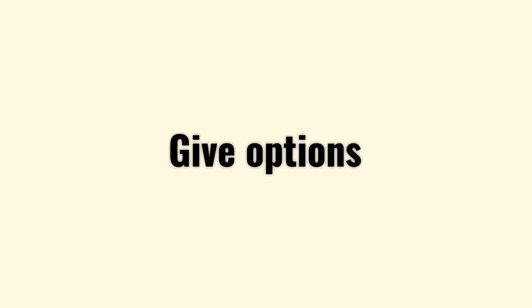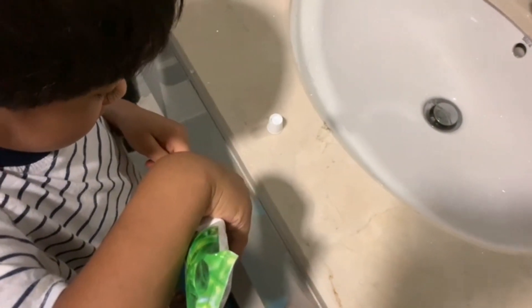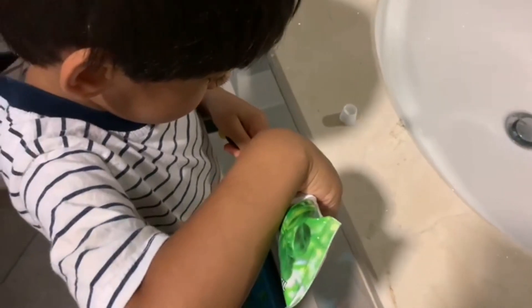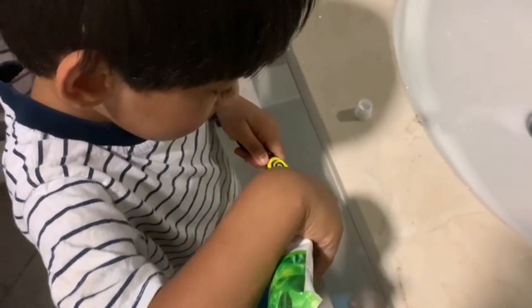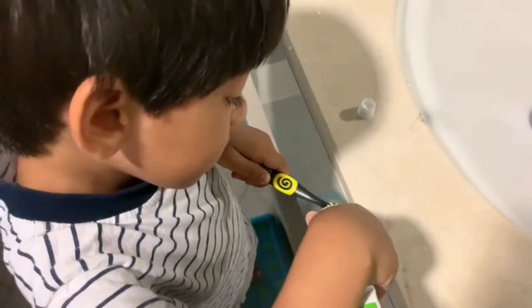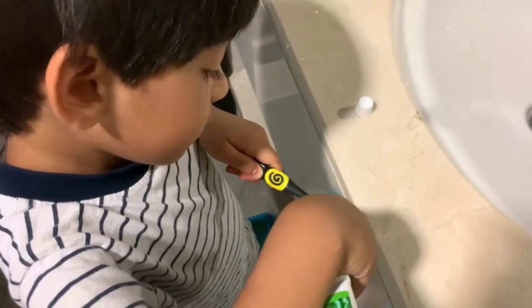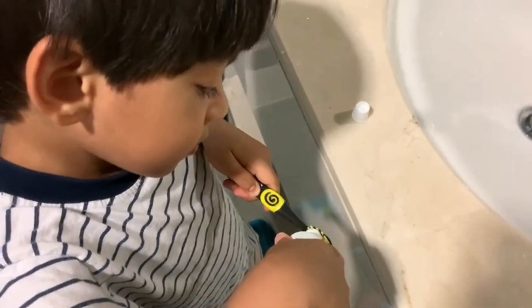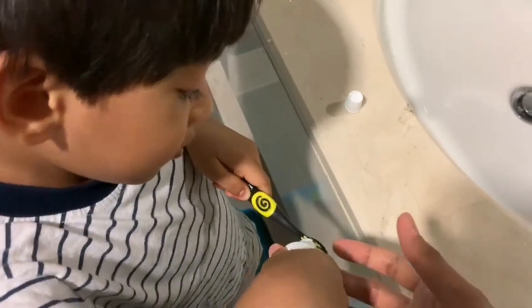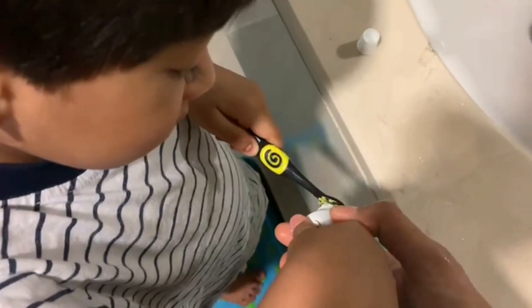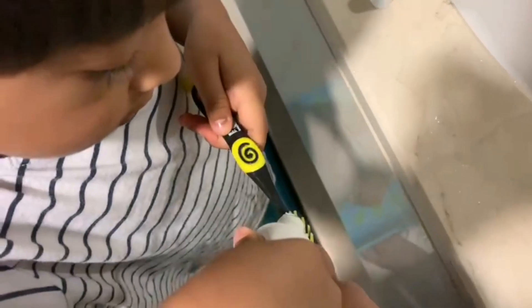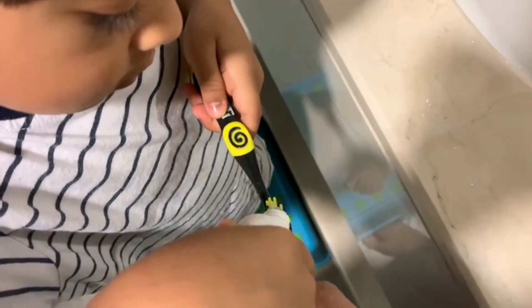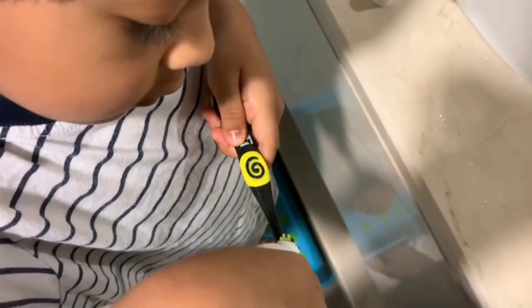Giving options works almost all the time when it comes to getting your child to obey or do something. When Arman would refuse to brush when he was smaller, I would ask him questions like: 'Which song would you like mama to sing when you brush, this one or the other one?' or 'Who's gonna squeeze the paste out, you or mama?'